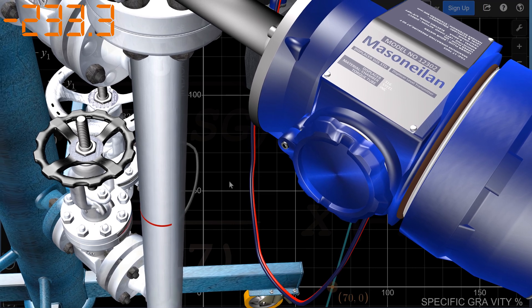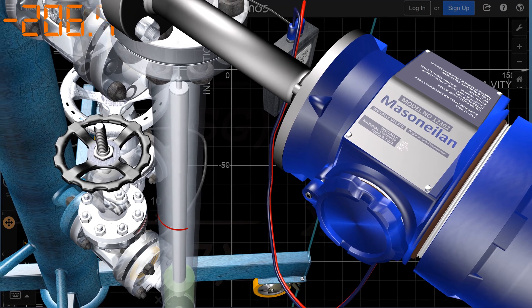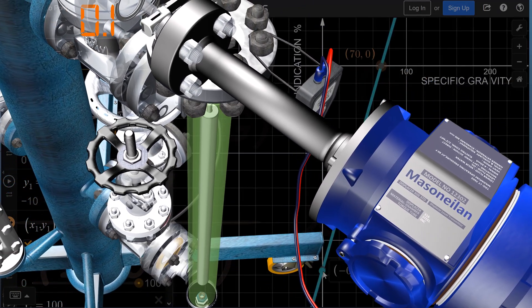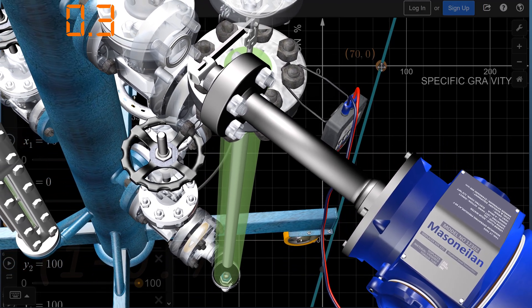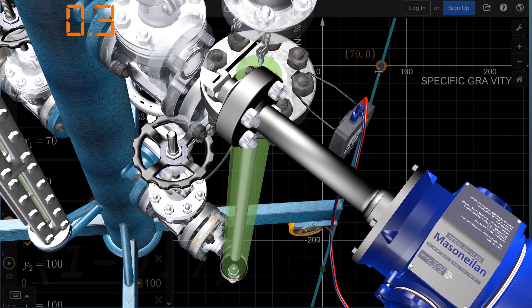This transmitter for measuring the interface has the standard displacer and is calibrated to measure two liquids: a specific gravity of 0.7 or 70% naphtha, and specific gravity of 1, water or 100%. This means that in order to indicate 0%, it must be filled with naphtha with light green color to be visible.